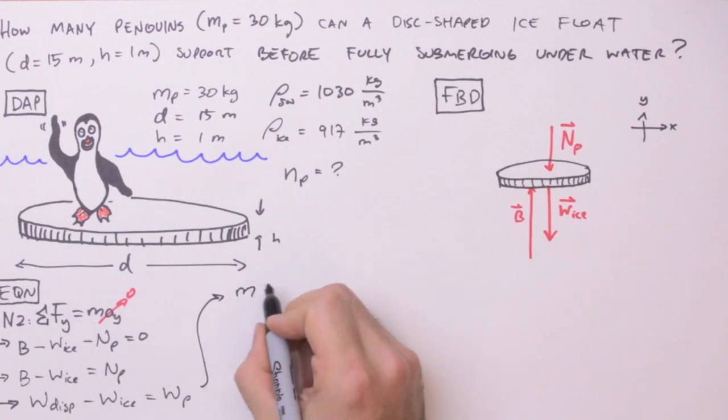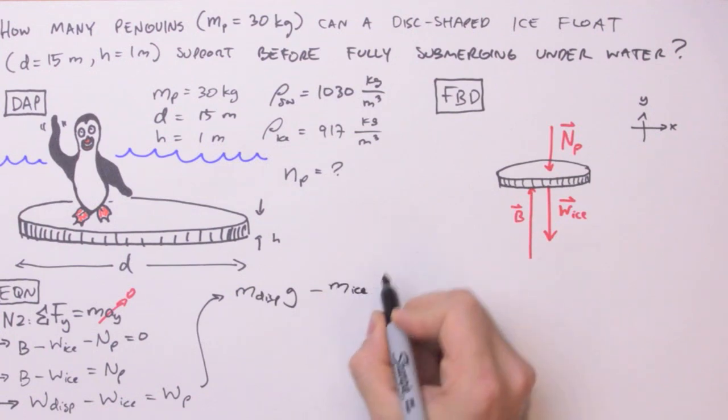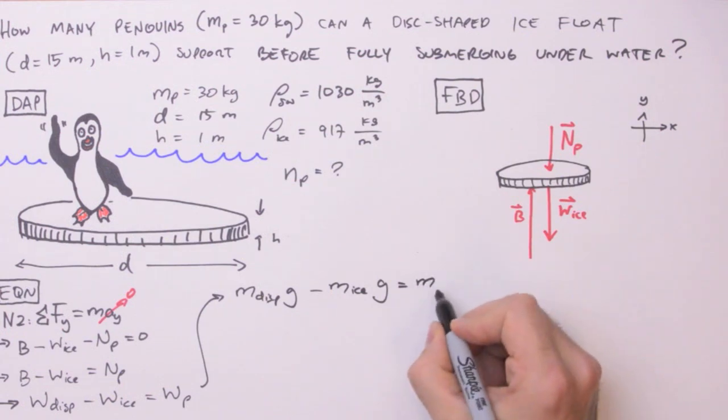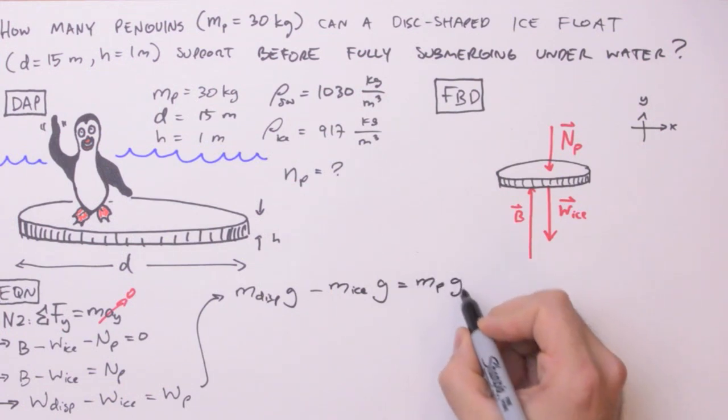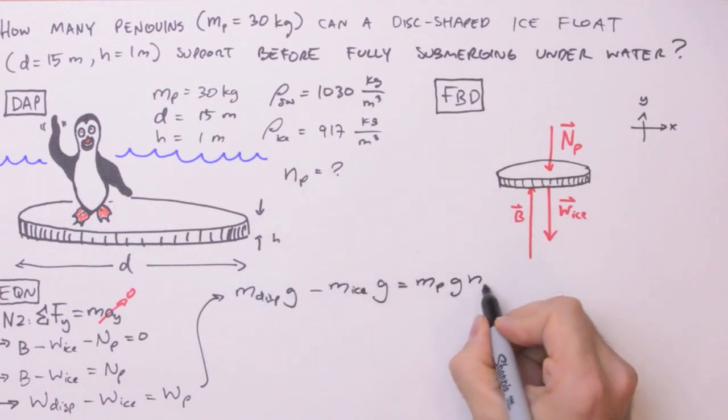Now we're going to substitute in our definition of weight, mass times gravity, for each of these terms. So we have the mass of the displaced fluid times gravity, minus the mass of the ice times gravity, equals the mass of the penguins times gravity. Only for this last term we're going to do something a little different. We're going to use the mass of a single penguin and multiply it by the number of penguins to give us the weight of all the penguins on that ice float. That's how we're going to get NP.